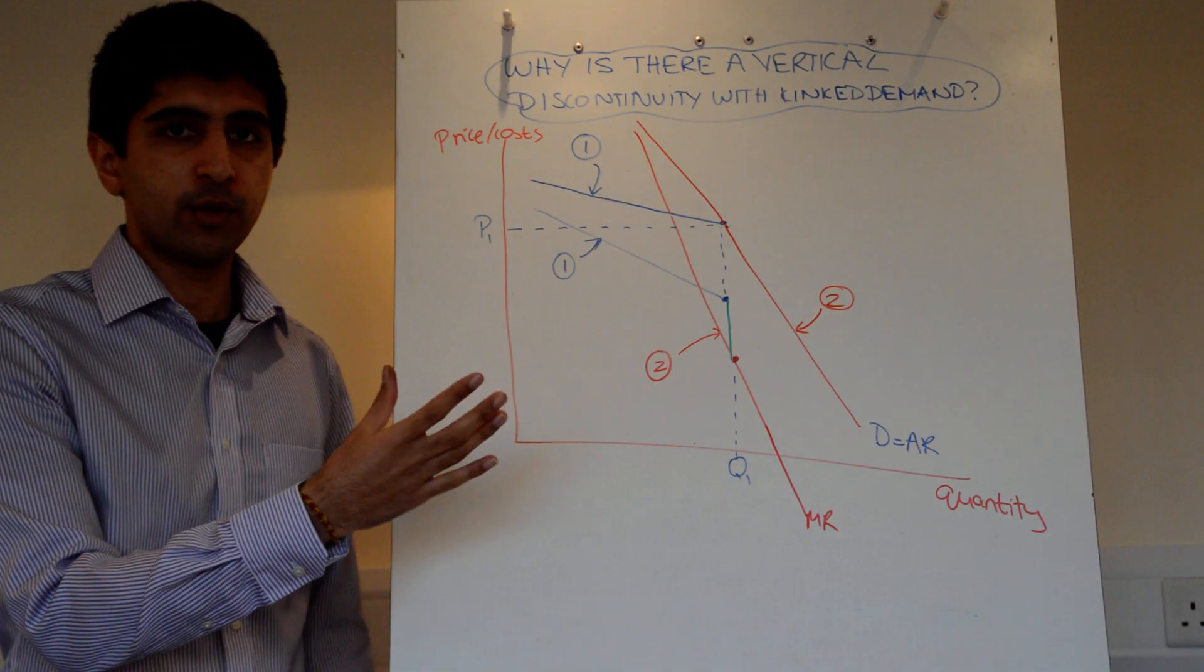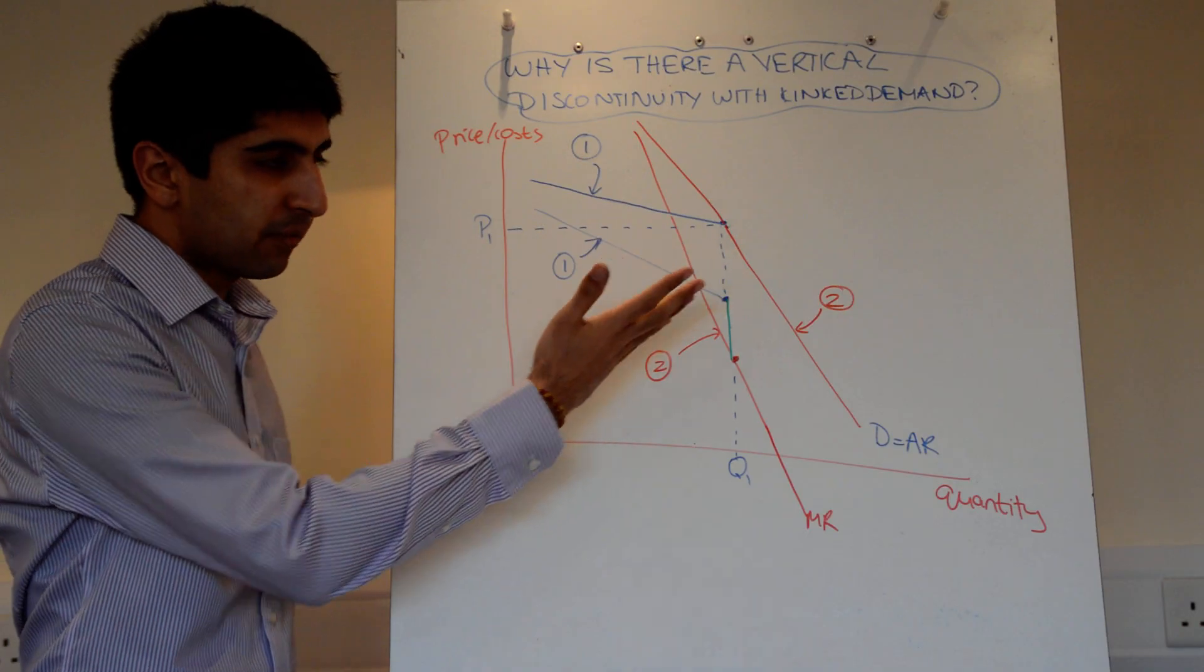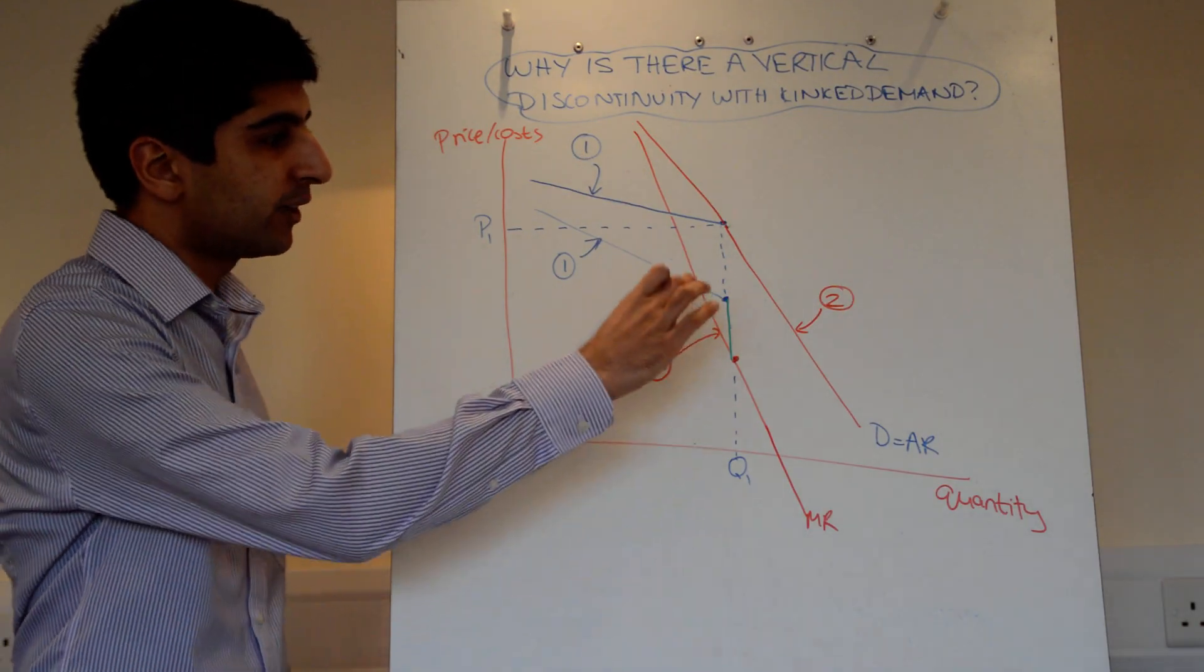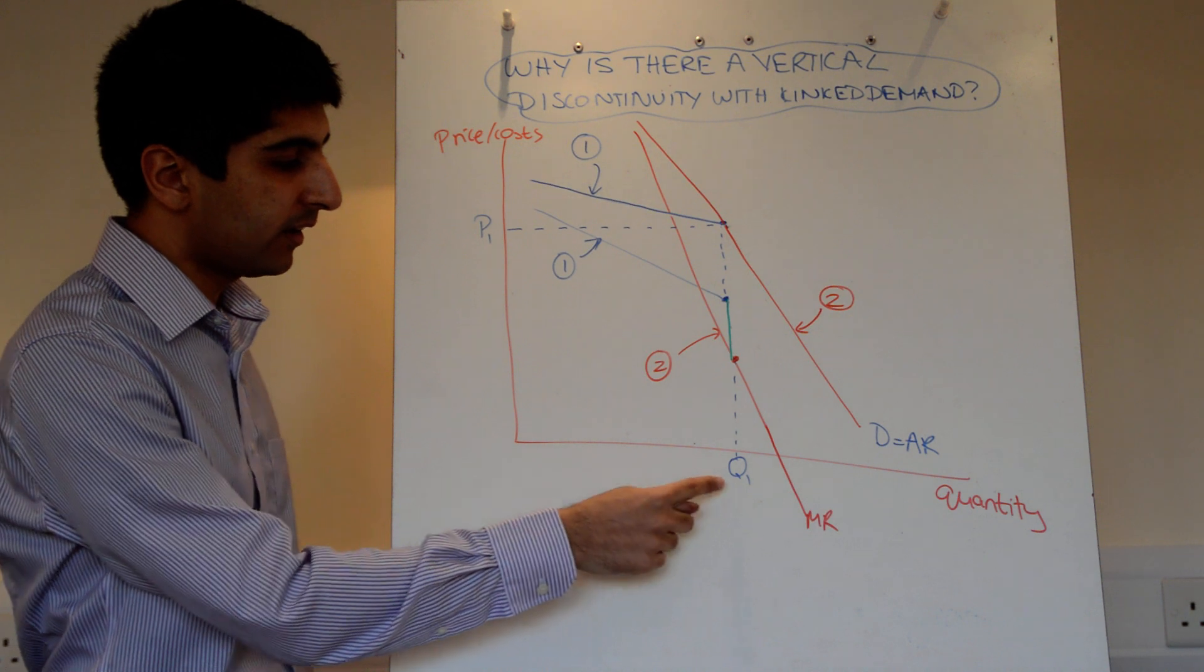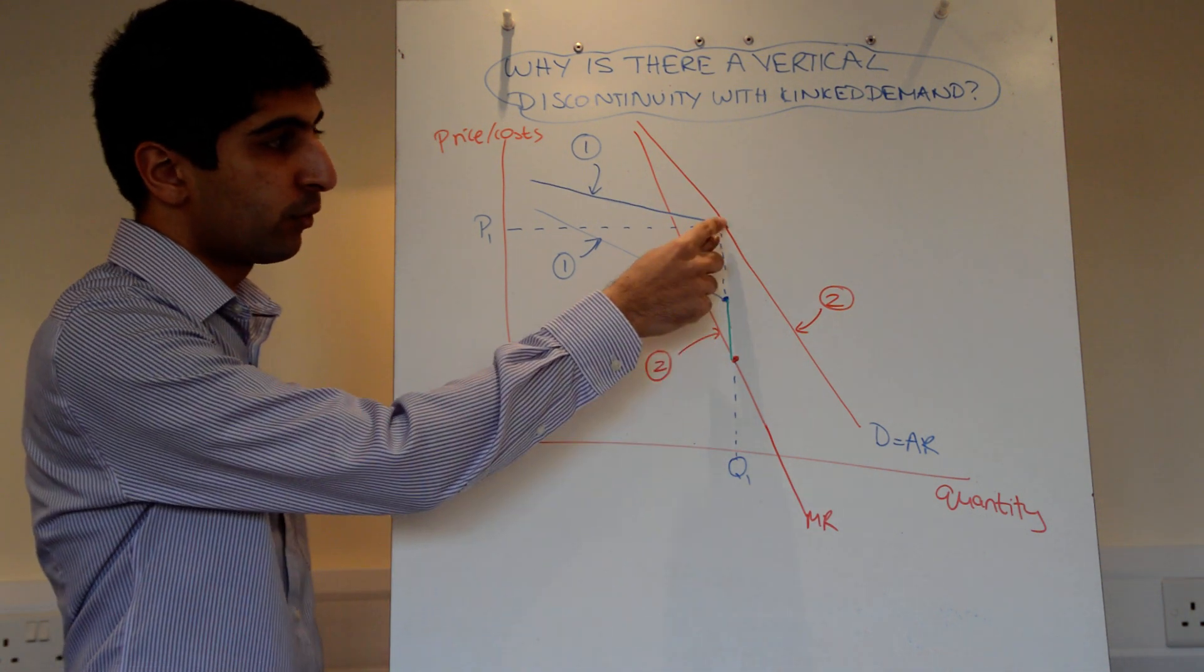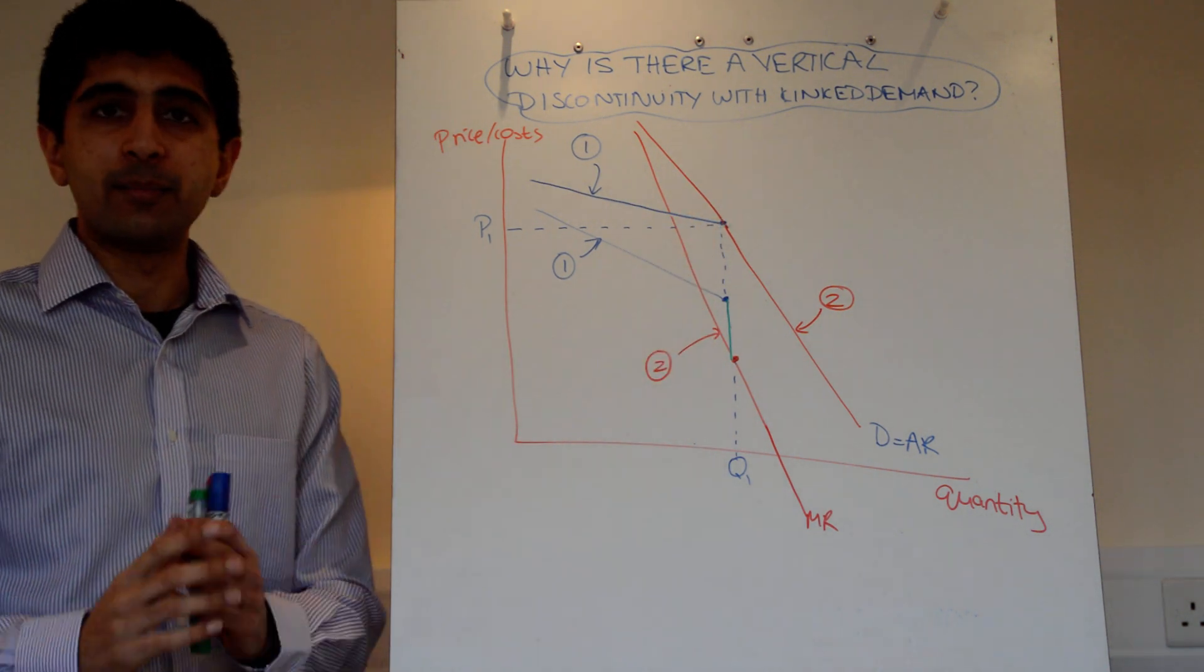No matter how you draw your marginal revenue curves, you will always have a vertical gap. Because the two curves, the two marginal revenue curves, do not intersect at the level of q1 that you've derived from the kink. That's the basic understanding of it.